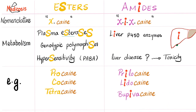Local anesthetics are divided into esters and amides. Esters end in '-caine' with a single 'i' — examples: procaine, cocaine, tetracaine. Amides have an extra 'i' in the name — examples: prilocaine, lidocaine, bupivacaine. Esters are metabolized by plasma esterases, have genotypic polymorphism, and can cause hypersensitivity reactions. Amides require liver enzymes such as the P450 system, so patients with severe liver disease may accumulate toxic levels.